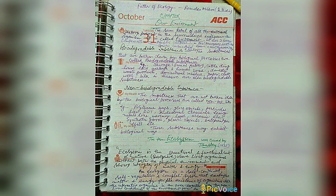Non-biodegradable substances are substances that are not broken down by biological processes. Examples include polythene bags, glass objects, pesticides like DDT, industrial chemicals, heavy metals like mercury, lead, and arsenic, synthetic fibers, plastic objects, and ballpoint pen refills. These substances may exhibit biological magnification.